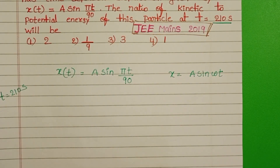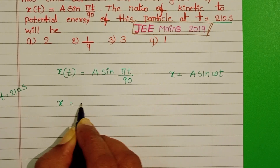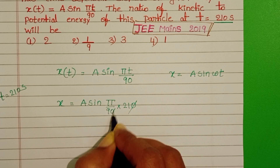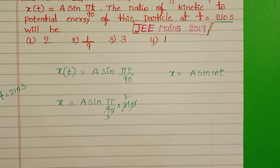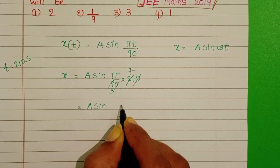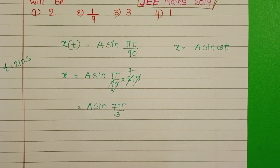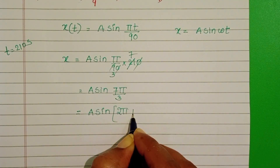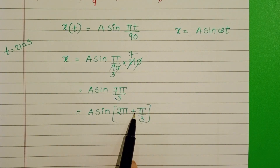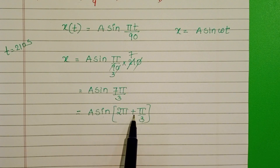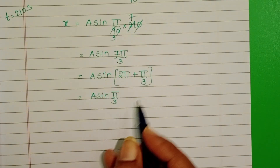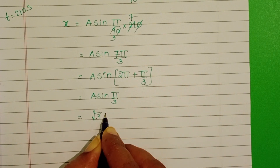When time equals 210 seconds, find the displacement of the particle. x = A sin(π/90 × 210). Now write this equation in the form A sin(2π + π/3). Since 2π + π/3 = 7π/3, and we know sin(360° + θ) = sin θ, this gives A sin(π/3). Since π/3 means 60°, and sin 60° = √3/2, the displacement x = √3A/2.